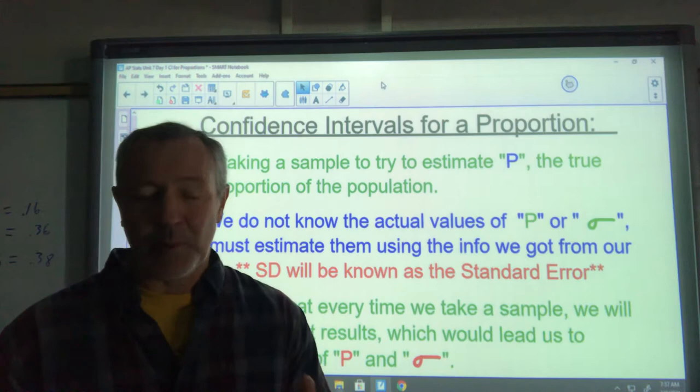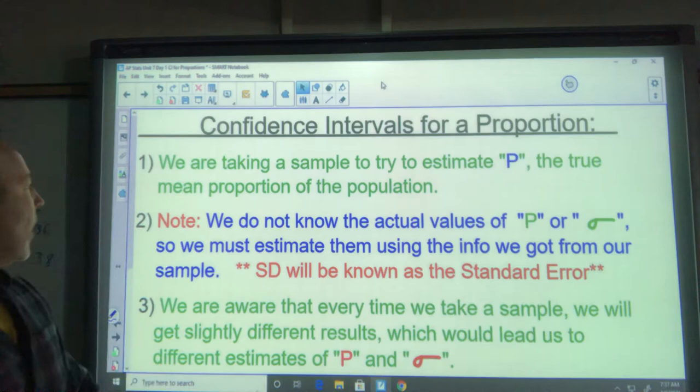Notice that every time I take a sample, we'd get different results. So we're not really ever going to be sure or know that true proportion. We're taking the sample, trying to estimate P, the true proportion of the population.